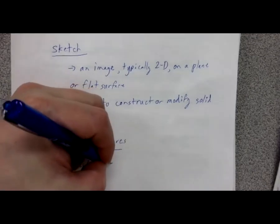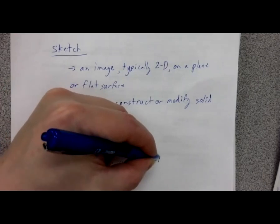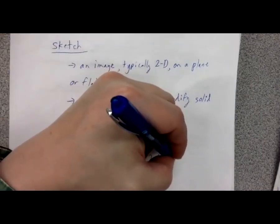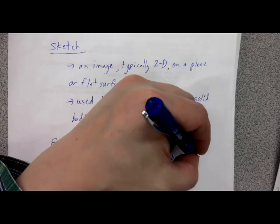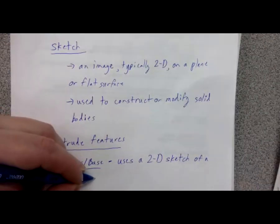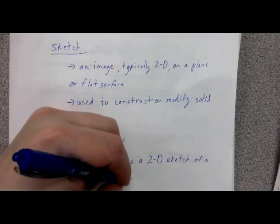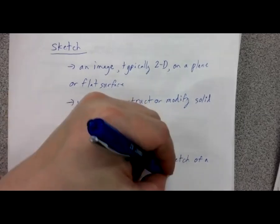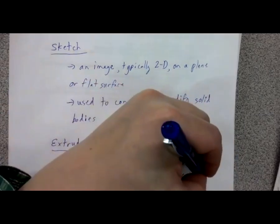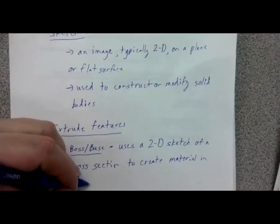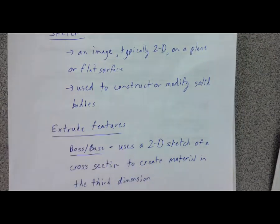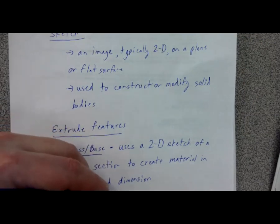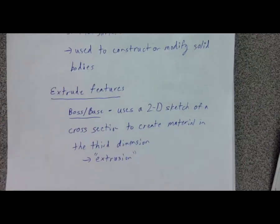What the extruded boss or base does is it uses a 2D sketch — a 2D sketch of a cross section — to create material in the third dimension. A lot of times I'll simply call this an extrusion.